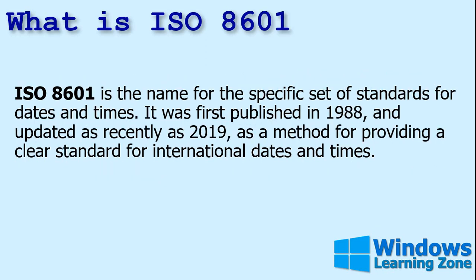8601 is the name for a specific set of standards for dates and times. It was first published in 1988, and we should have been using it all this time. They recently revised it as of 2019, and it's a method for providing a clear standard for international dates and times.